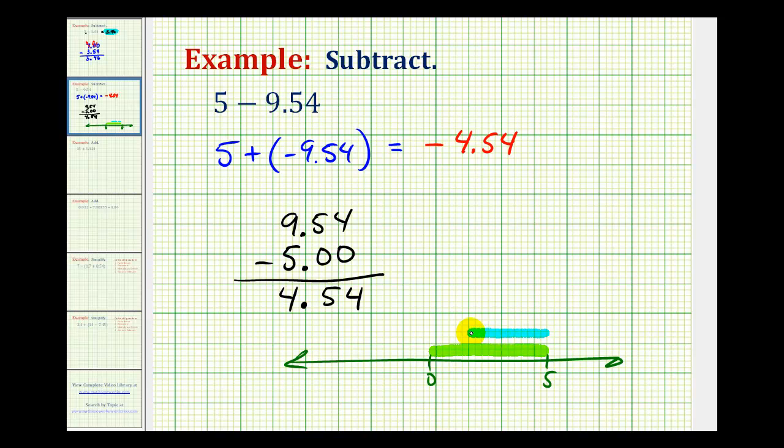...here's left 5 units, we'd have to go 4.54 more units to the left, maybe somewhere in here, where we would be at negative 4.54.